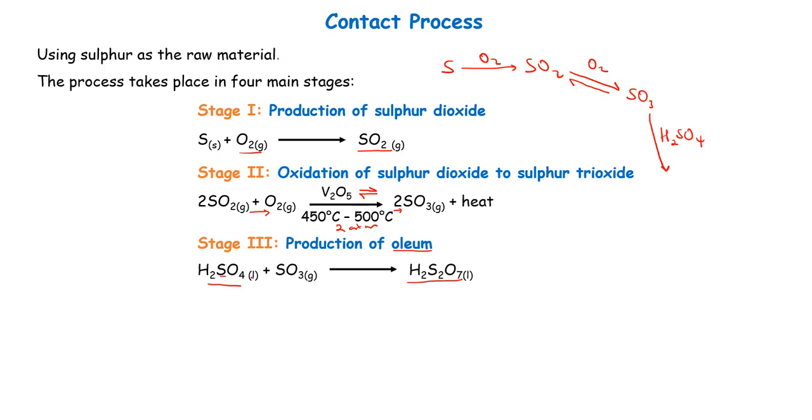For example sulfur we have two atoms, you put S2 and then oxygen we have four atoms, you put 4 plus 3 which is 7. So this is our oleum, H2S2O7. In our third stage we produce our oleum because we don't want to directly dissolve our sulfur trioxide in water to produce sulfuric acid. We shall see why in our detailed version of this contact process.